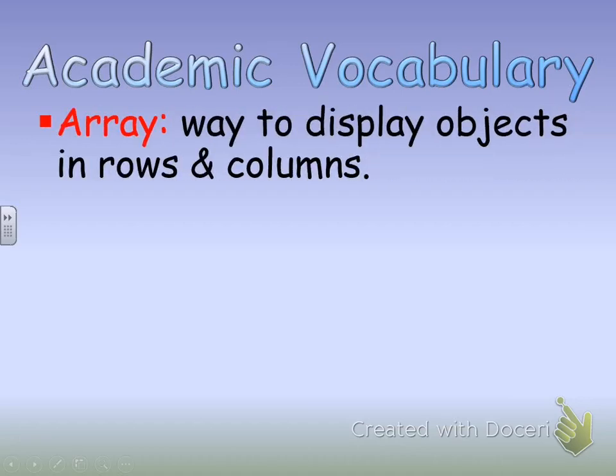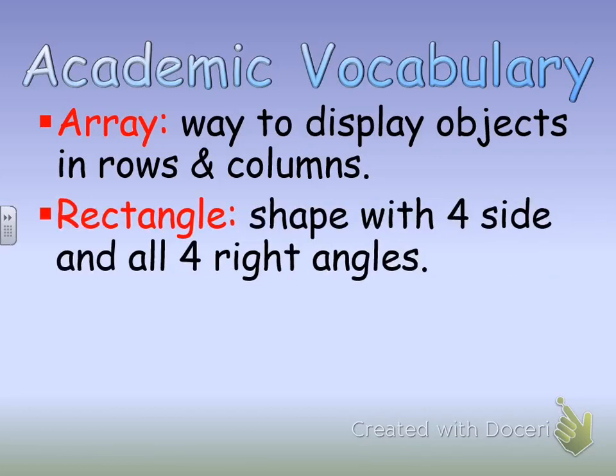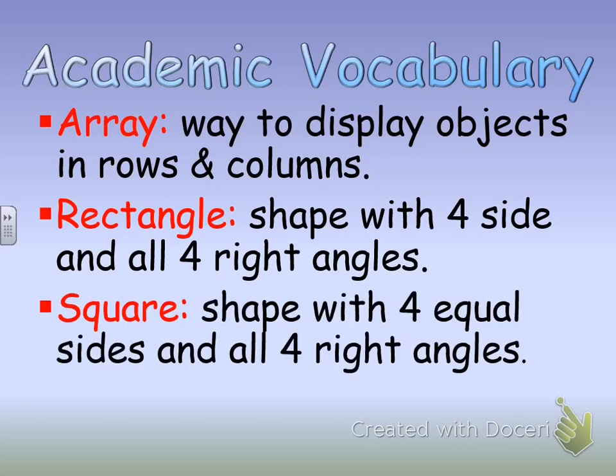The vocabulary for today — be sure to write these down in your math journal. An array is a way to display objects in rows and columns. A rectangle is a shape with four sides and all four right angles. A square is a shape with four equal sides and all four right angles. A right angle is an angle that is 90 degrees, or a perfect corner.